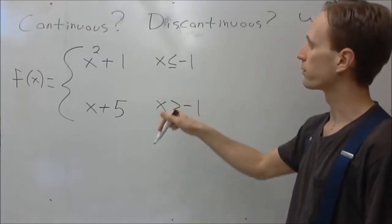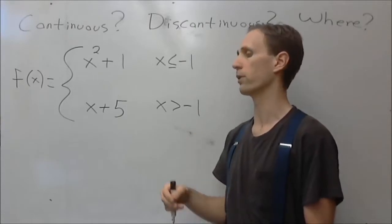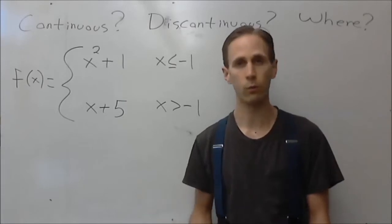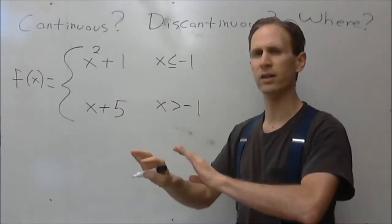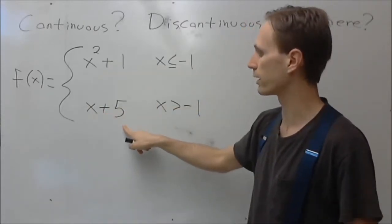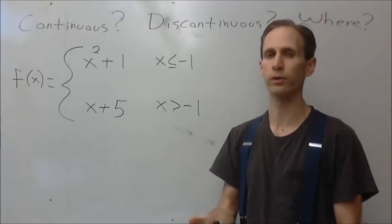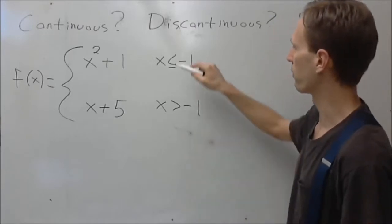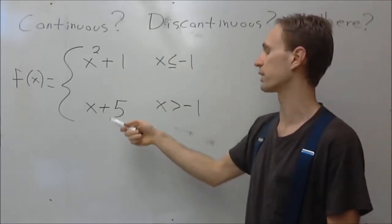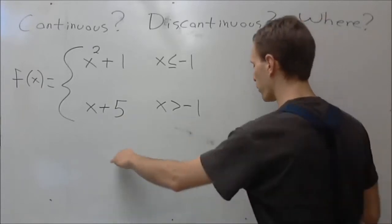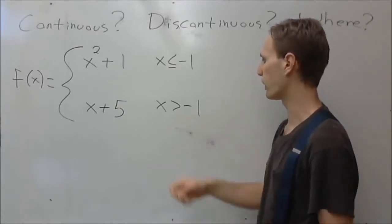Let's do a piecewise example. Here f of x is a parabola if x is less than or equal to negative one, and a line if x is greater than negative one. The question is: does this function have any discontinuities? The parabola by itself is nice and connected — no denominators, no problem. The line is totally connected. When you have a piecewise function, the only points of contention are the breakpoints — here at x equals negative one.